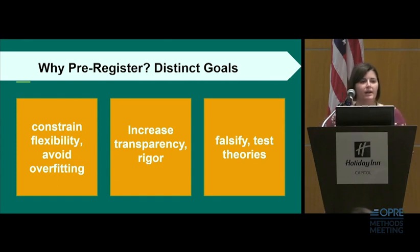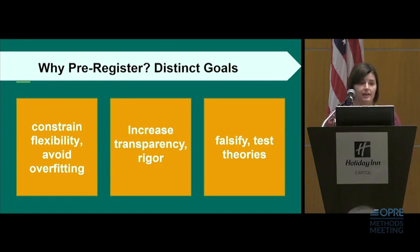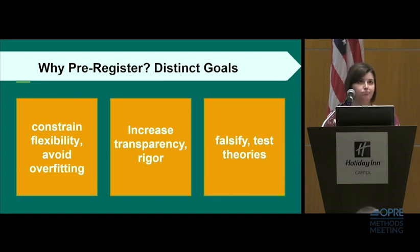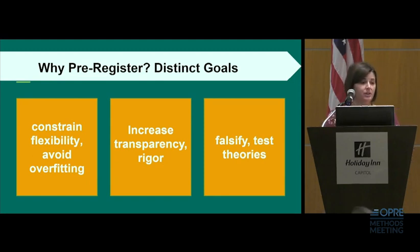Moving on to the why — why is it the case that we need to pre-register? There are several distinct goals that explain why we might want to engage in this practice. Building on what Samin was talking about before, one of our main priorities for doing this practice is that we want to constrain researcher flexibility and avoid overfitting to our data.